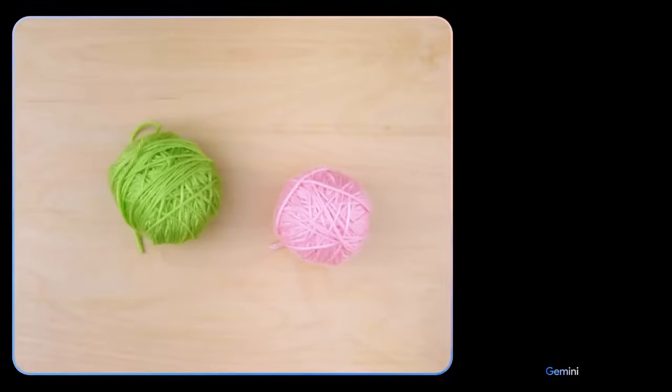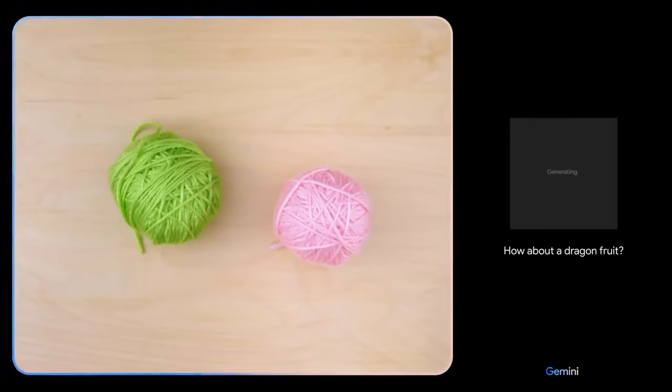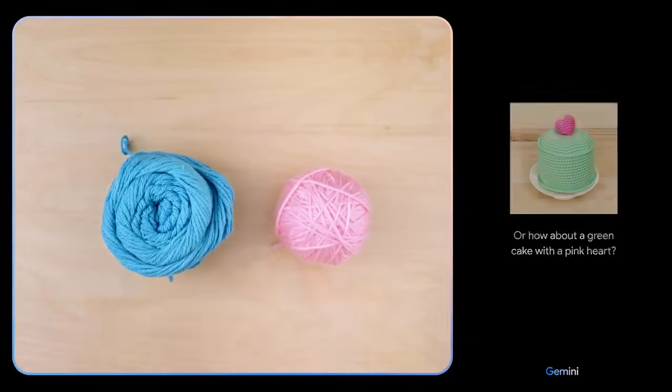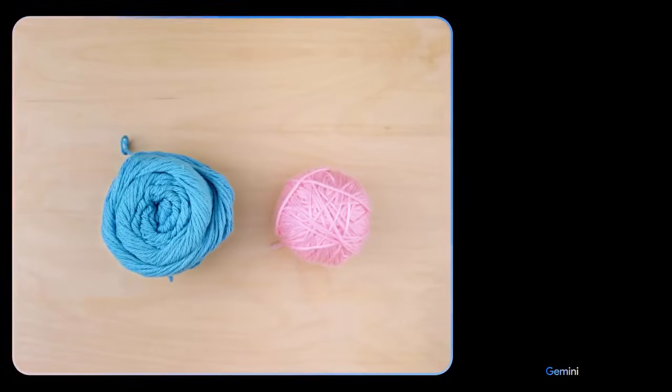Give me some ideas for what I could make with this. I see pink and green yarn. How about a dragon fruit? Or how about a green cake with a pink heart?